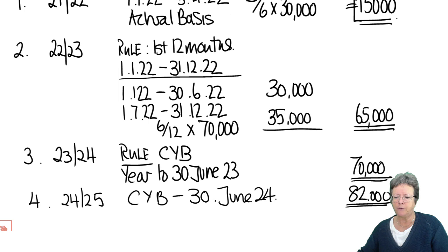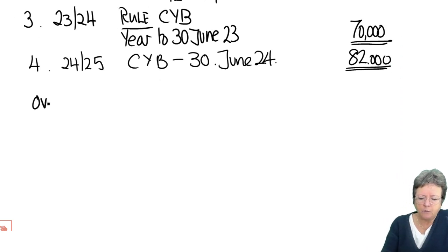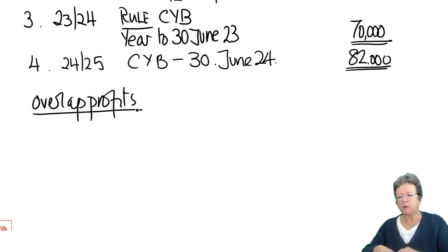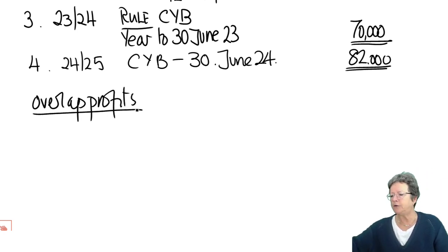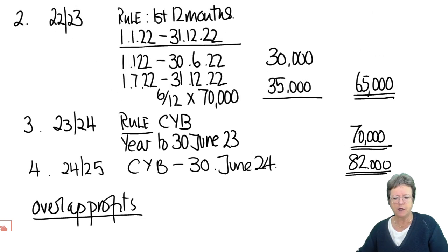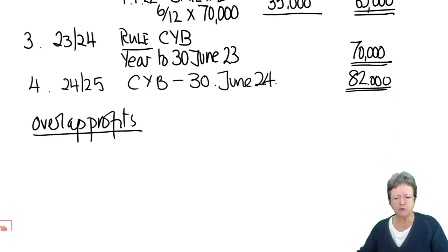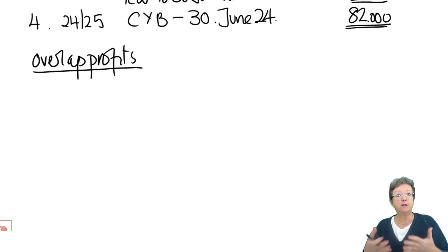That's the first part of this example. The second part is overlap profits. One way to approach this: some people can see straight away which bits have been taxed twice just by looking at the numbers. Not everyone will, so I'm going to draw it out so you can see how it works visually. In an exam you probably wouldn't present it this way, but you could do it as a working for yourself to understand what's going on.